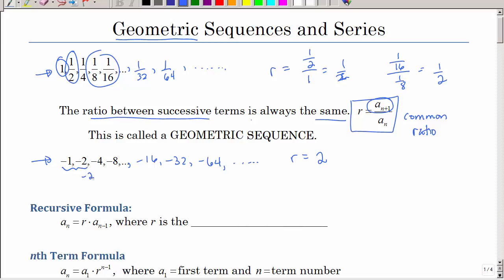My common ratio would be two. Again, you can take any two terms and divide as long as the one on the right divided by the one on the left.